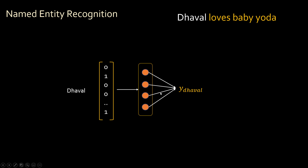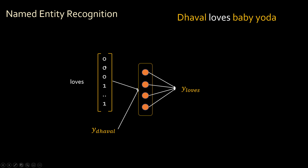Then you go back and supply 'loves' — converting it into a vector — along with the previous output from processing 'the world.' So the input to the layer is not only the next word but also the previous output, because language needs to carry context. If you only have the word 'loves' without what came before, it might mean something different. So this architecture provides context or memory. For the third word, you again supply 'baby' to the same network along with the previous output.